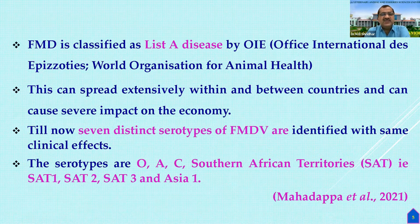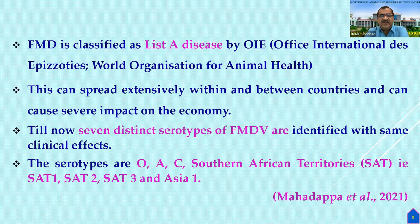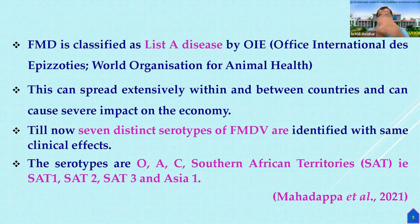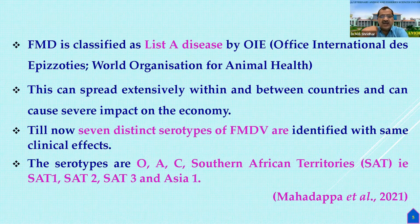FMD is classified as a List A disease by the OIE — the World Organization for Animal Health. It can spread extensively between countries causing severe economic impact. Seven distinct serotypes of FMDV are identified with the same clinical effects: O, A, C, South Asia, SAT-1, SAT-2, SAT-3, and Asia-1.